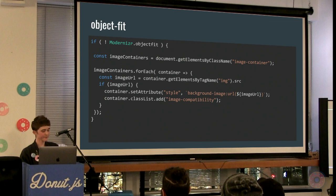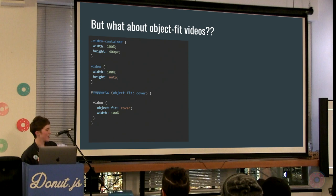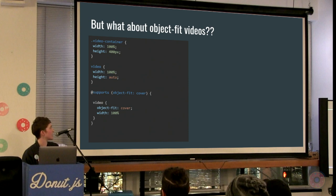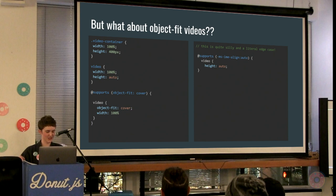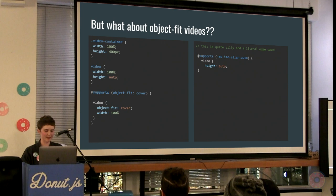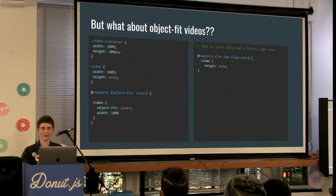This works great for images, but not for videos, because you can't use background-image with a video. For that, you can set the width of the video to 100% and the height to auto, then use a @supports at-rule targeting object-fit: cover to object-fit the video and set the height to auto. Except this doesn't work for Edge. The latest version of Microsoft Edge supports object-fit for images but not for videos, which means it tries to implement the CSS within the @supports rule but basically fails. The best solution I've found is to specifically target Edge with its own @supports rule and set the height back to auto. Normally you'd use @supports to target a property and not a specific browser, but this is literally an edge case. If someone has a better idea, I'd love to hear it.